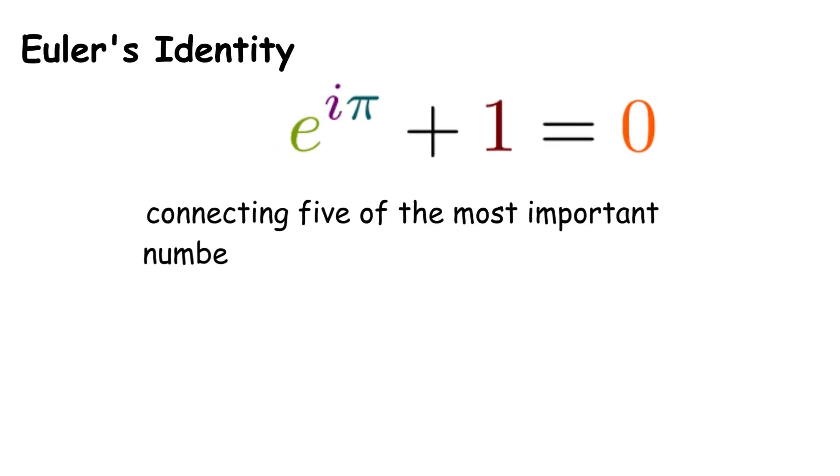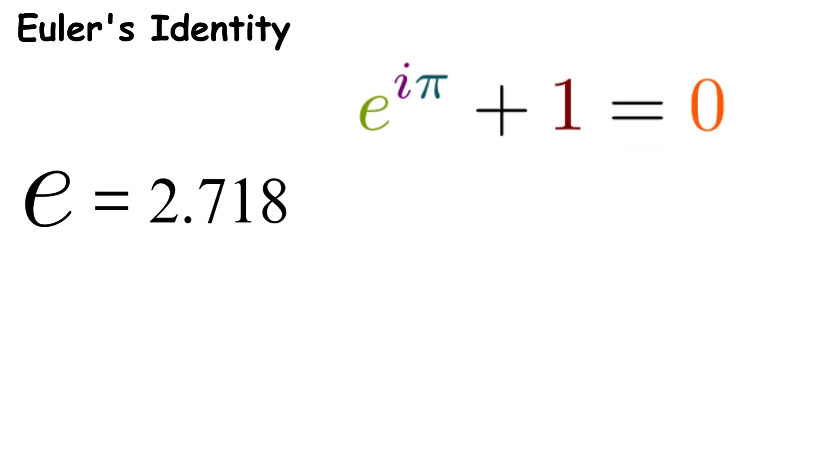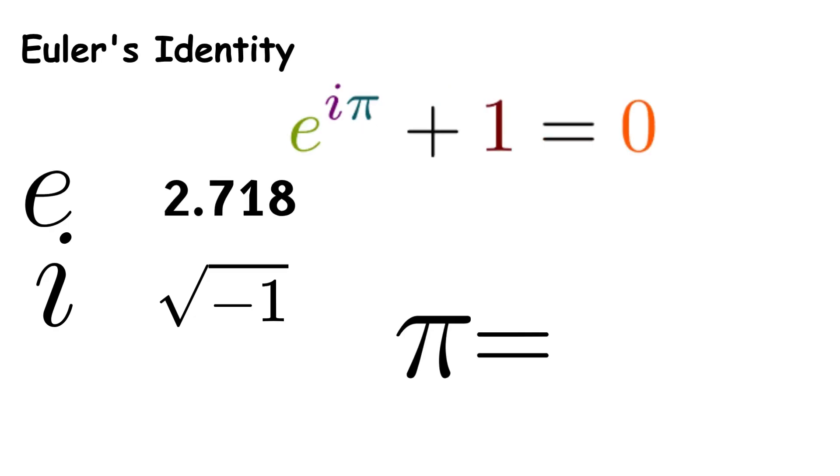The number e is about 2.718, and appears everywhere in nature. i represents the square root of negative 1, which allows us to work with impossible numbers. And pi is the famous ratio of a circle's circumference to its diameter.